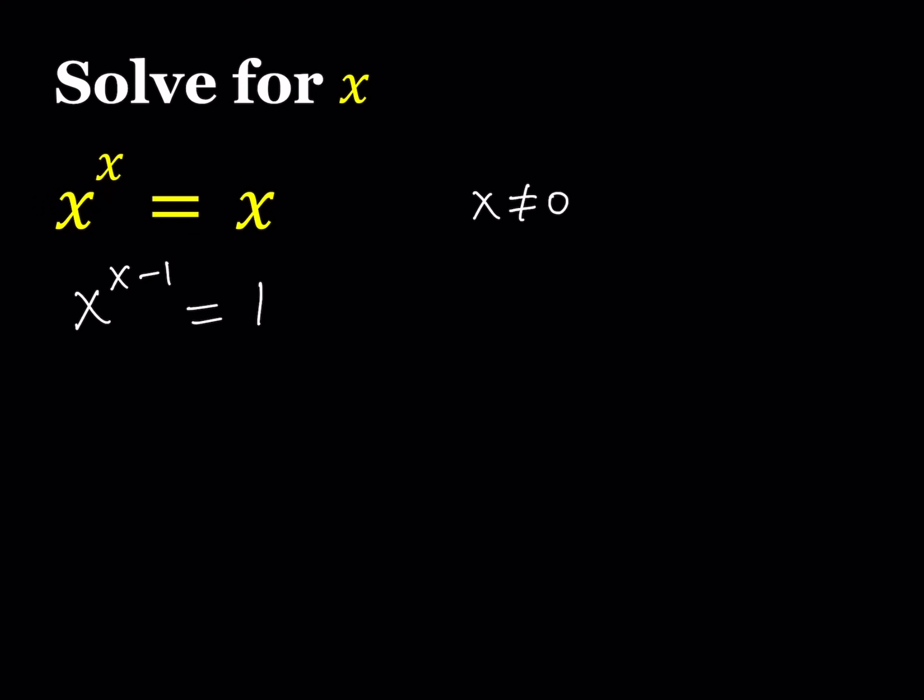So this is kind of nice because I have a number on the right hand side, and there are a couple of ways to obtain 1, if we're dealing with real numbers. For example, if the base is 1, then this is always going to work because any power of 1 is going to be 1. So x equals 1 is a good candidate. It's a solution.